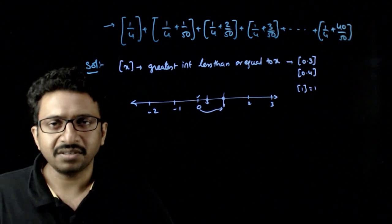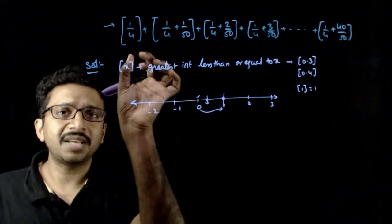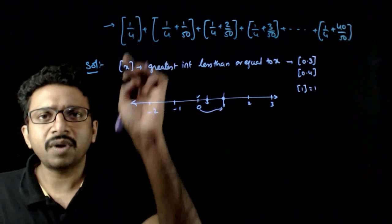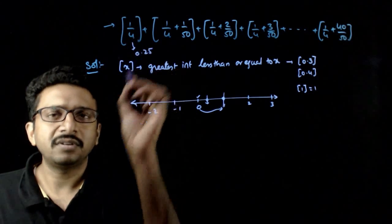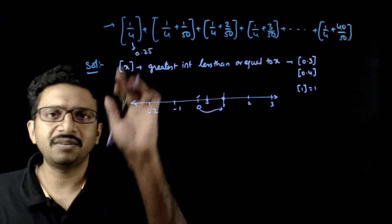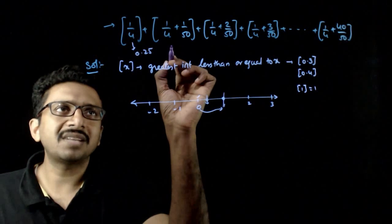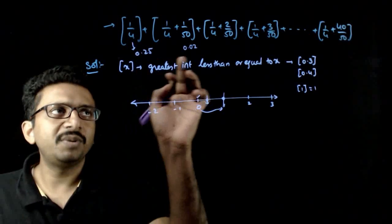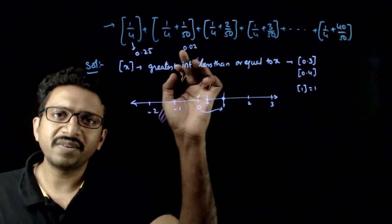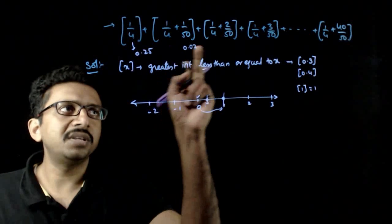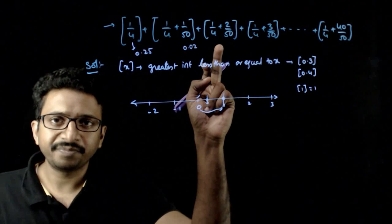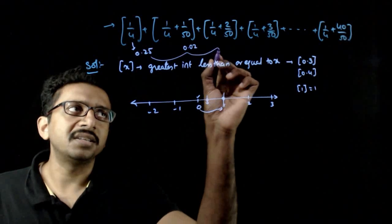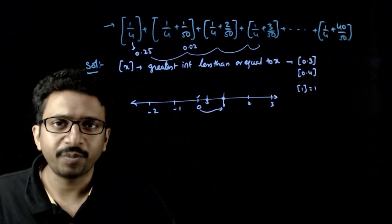With this understanding of the greatest integer function, you are asked to find the sum of all these greatest integers. The first term has integer part of 1/4, which is 0.25, so its integer part is 0. Then 1/4 plus 1/50 gives slightly more than 0.25 — since 1/50 is 0.02, this is 0.27, which is still less than 1, so its integer part is also 0. Similarly, 0.29 and 0.31 also have integer part 0. But the number is slowly increasing by 0.02 each time.